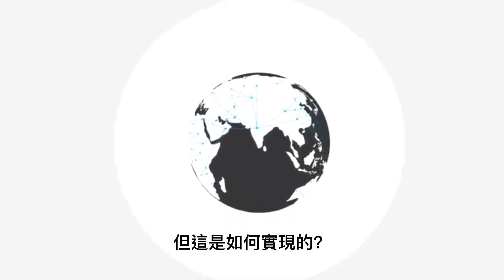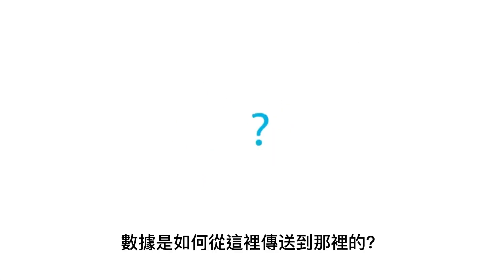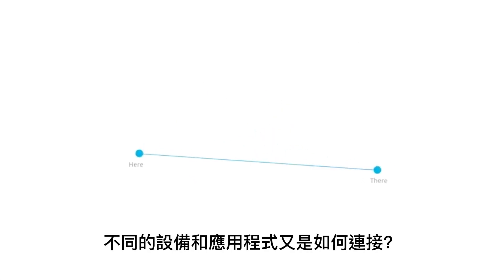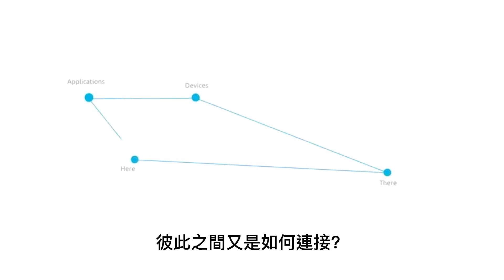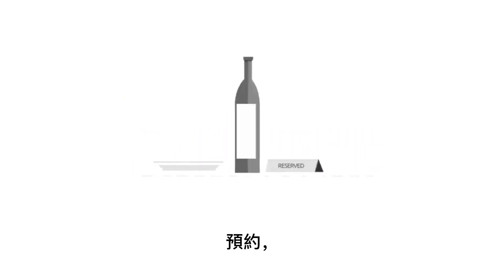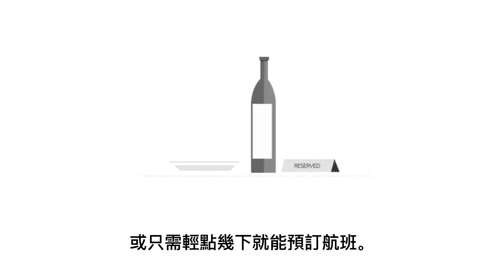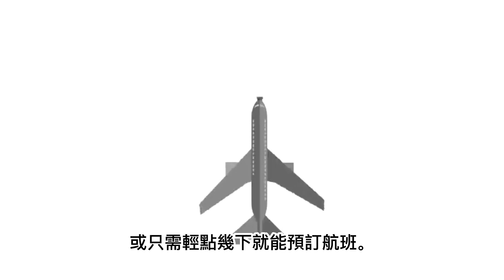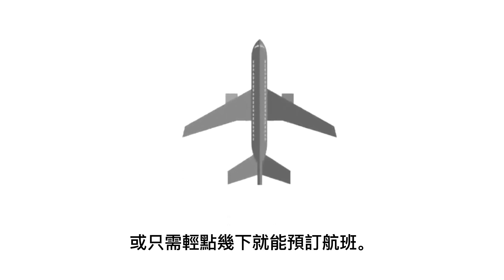But how does it happen? How does data get from here to there? How do different devices and applications connect with each other to allow us to place an order, make a reservation, or book a flight with just a few taps or clicks?